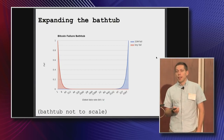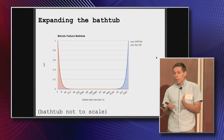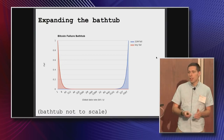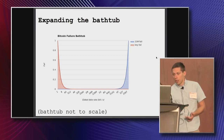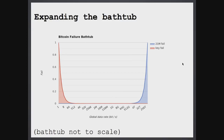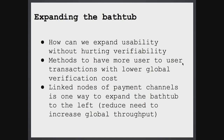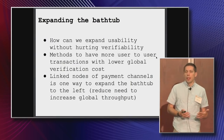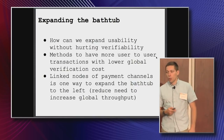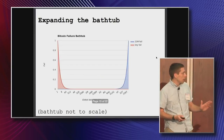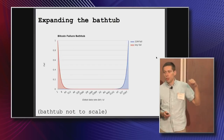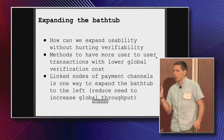So what we want to do is expand the bathtub — make sure we're within the bathtub, which is sort of why we have this conference, but expanding it would help too. How can we expand usability without hurting verifiability? Methods that move things user-to-user with user verification but without global verification. One way to help is linked nodes of payment channels, which expands the bathtub on the red side where more people can use it without requiring higher global throughput. Joseph will talk about how we can do that.